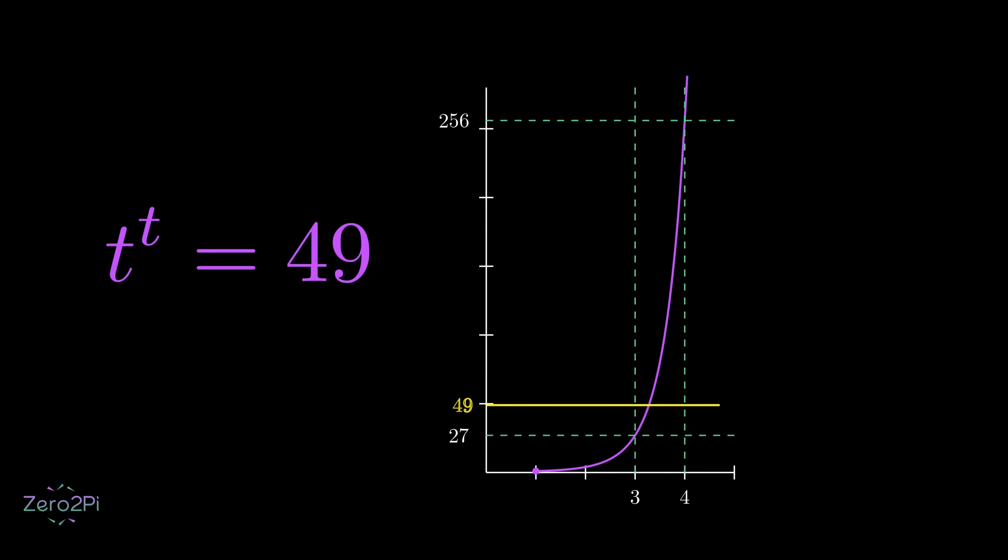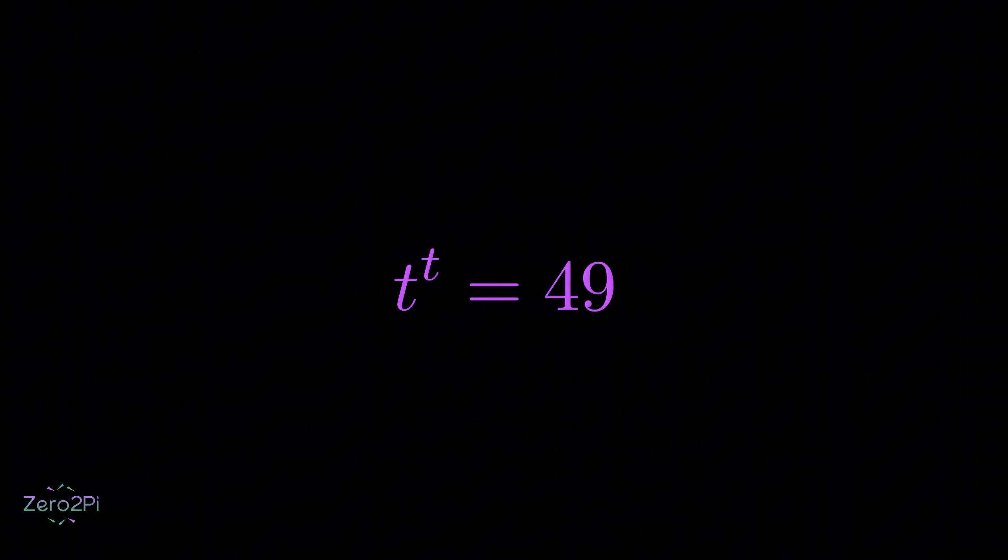And this solid yellow line represents y equals 49. Notice how it intersects the curve at exactly one point. That means there's only one real solution to the equation. Alright, let's try solving it.